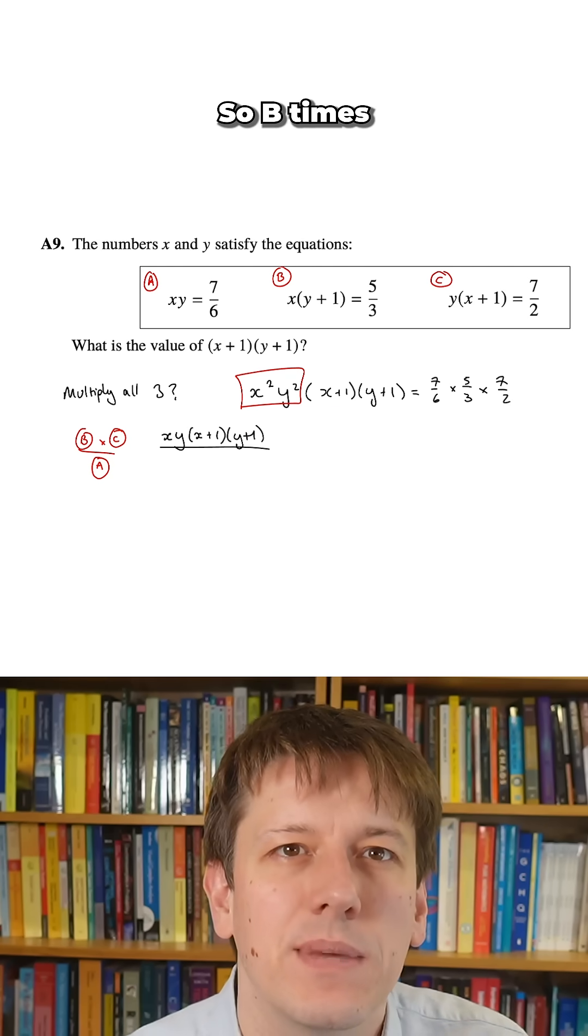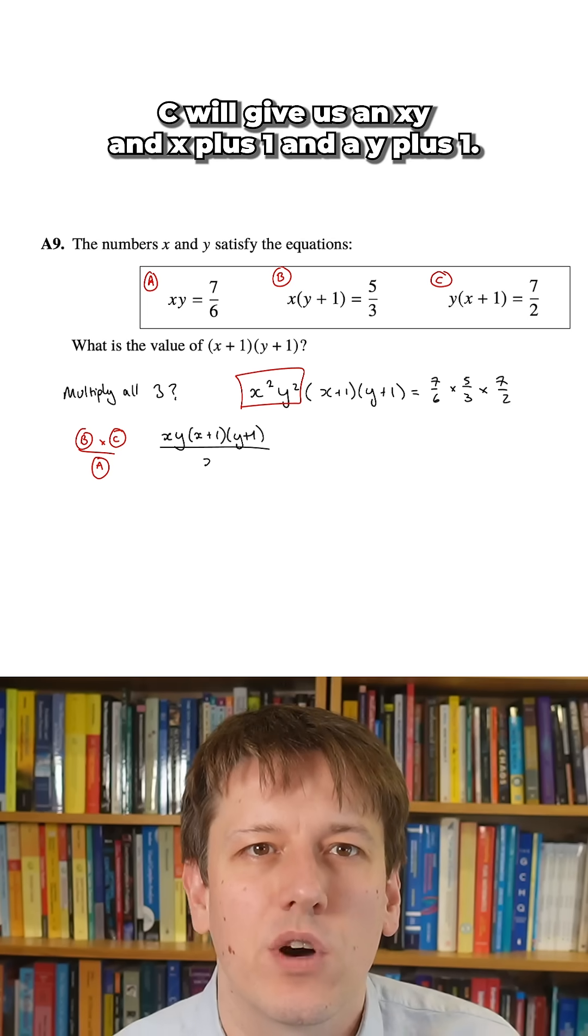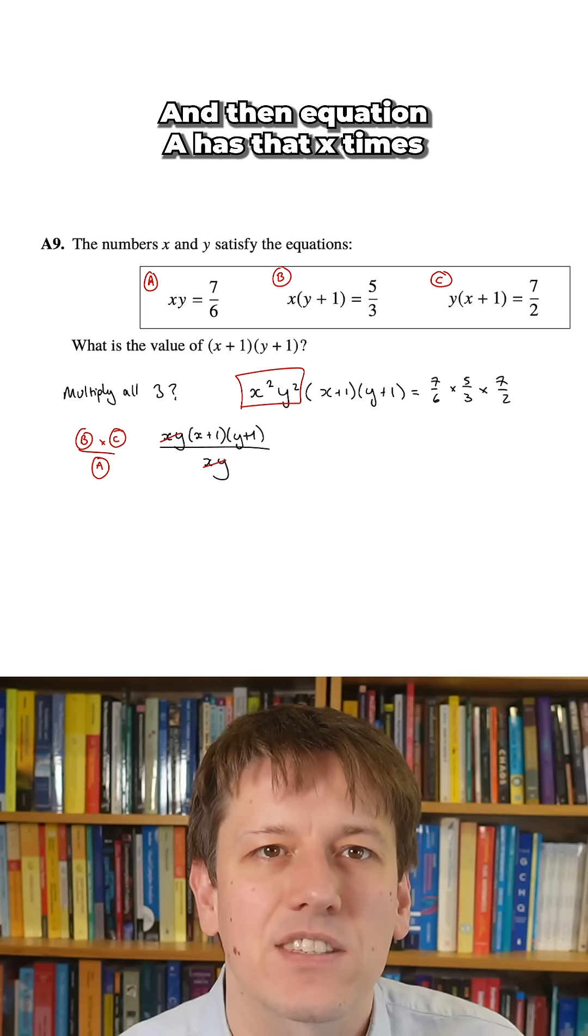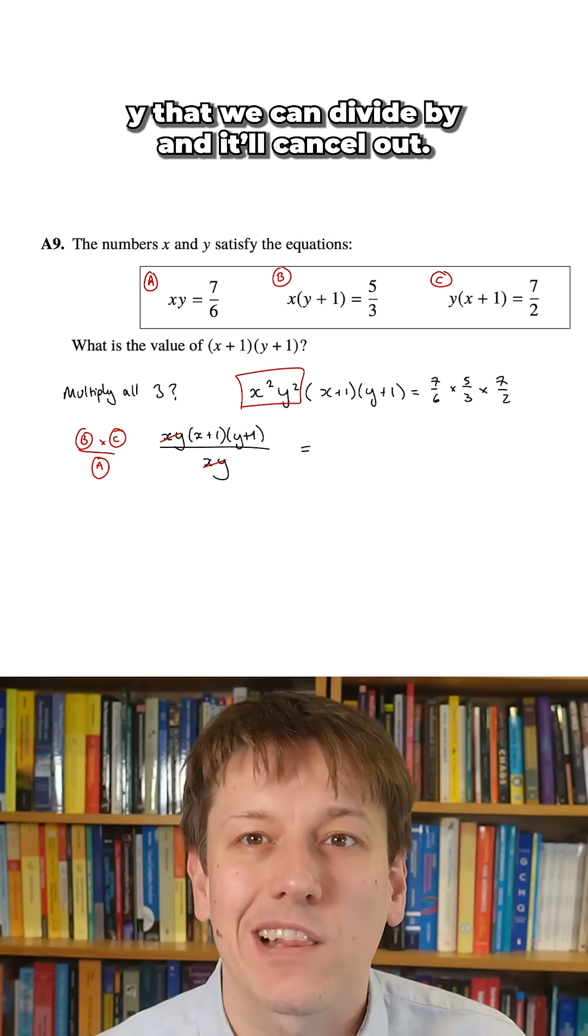So that equals equation b times equation c divided by equation a. On the right-hand side, that's 5/3 times 7/2 divided by 7/6.